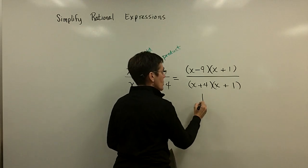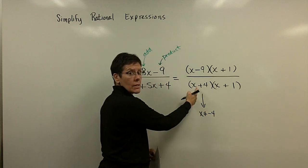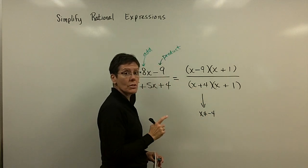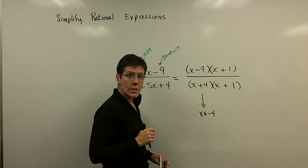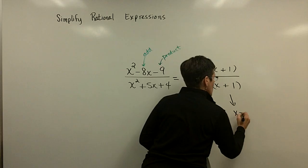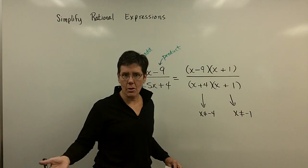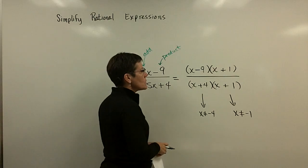Let's list the restrictions. x could not equal a negative 4 in that problem because a negative 4 plus 4 would be equal to 0. And 0 times anything is 0. So that's one of the restrictions. Right here, x could not equal a negative 1. I could set that x plus 1 equal to 0 and solve for x. Those are the two restrictions.